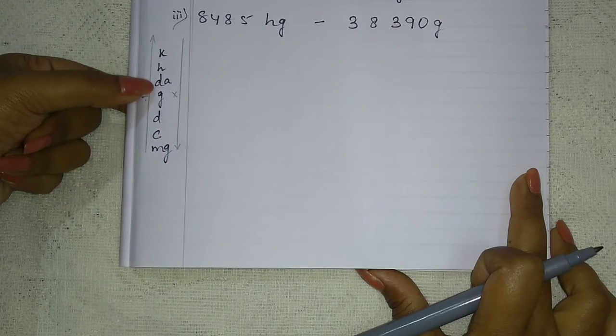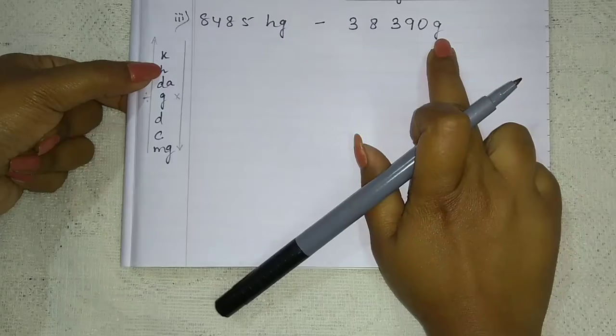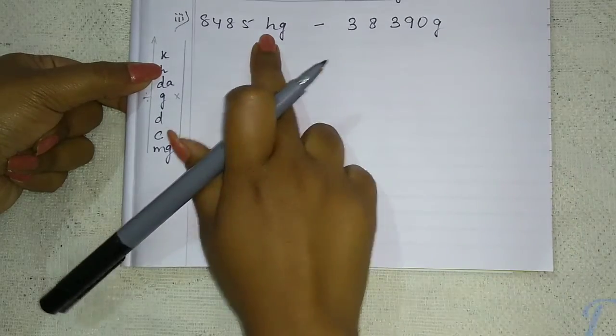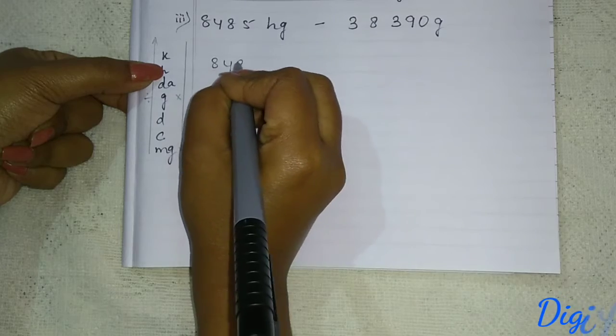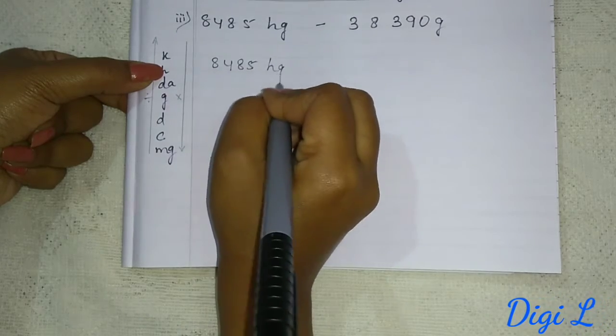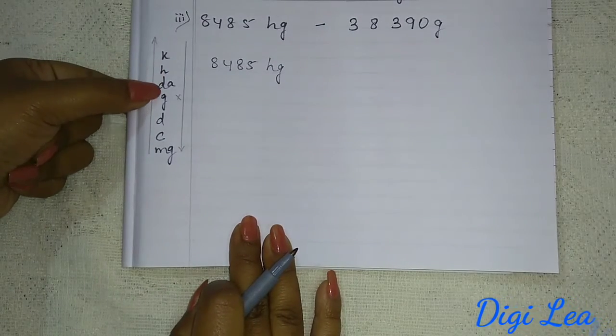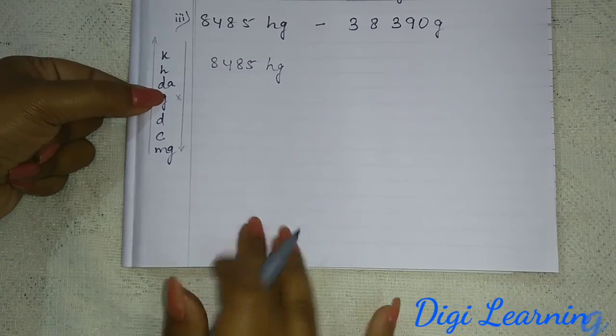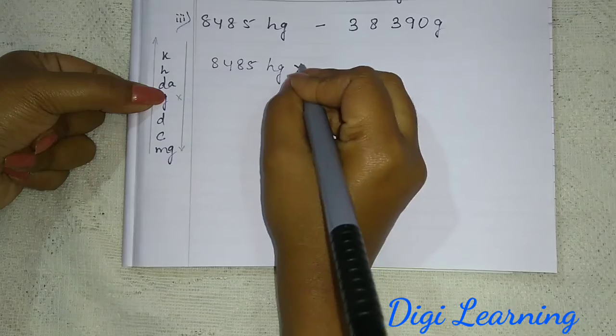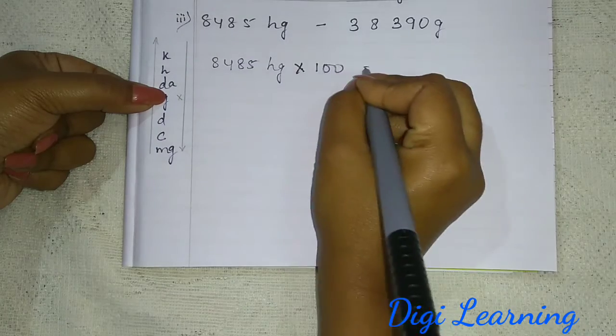So now again, here the same way, hectogram convert to gram. For that, what we will do? 8485 hectogram. We have to multiply it by ten into ten, means hundred.